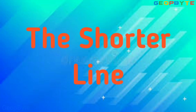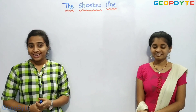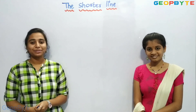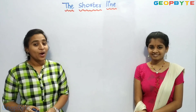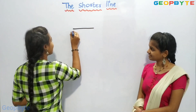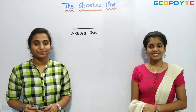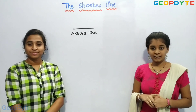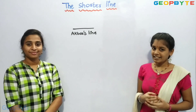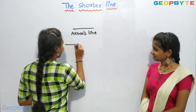Now let us get into the topic: The Shorter Line. Children, there was a famous king, Akbar. He had a smart minister called Birbal. Once, Akbar gave a difficult question to Birbal. He drew a line on the floor and said, 'Birbal, here is a line. You need to make this line shorter without erasing.' Birbal thought in a smart way and drew a longer line.